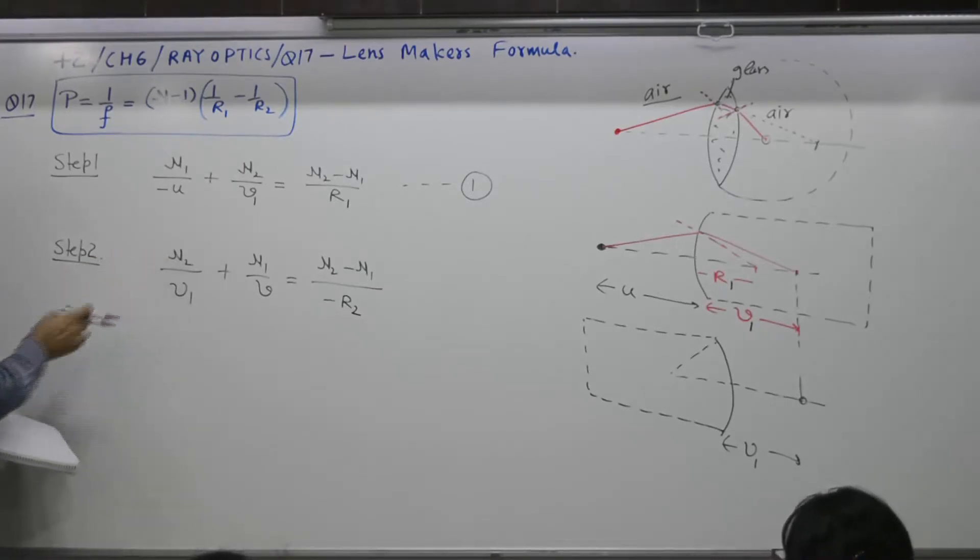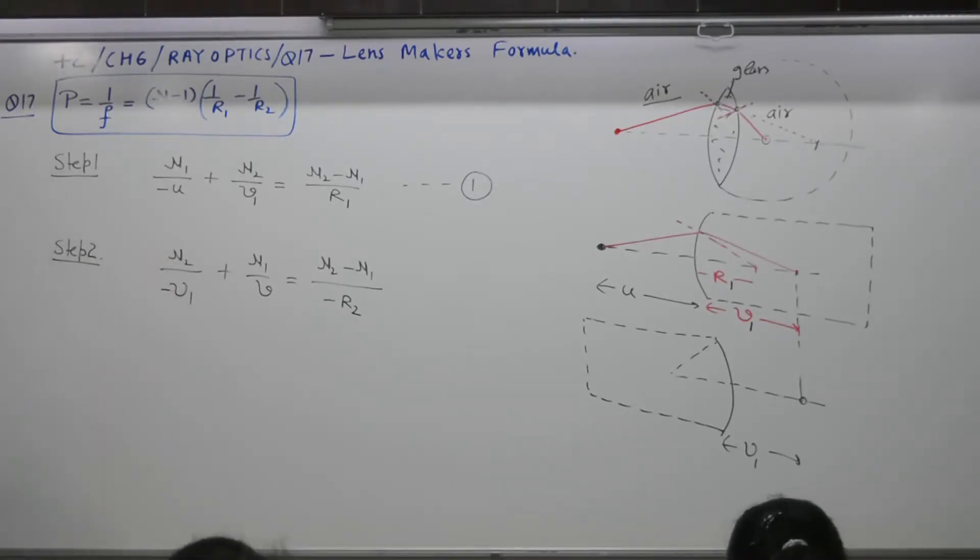It is minus nu2 by V1 plus nu1 by V is equal to nu2 minus nu1 by minus R2. Mark it just like this. Complete it. Equation number 2.